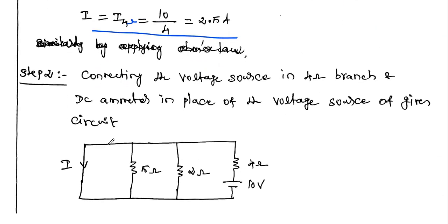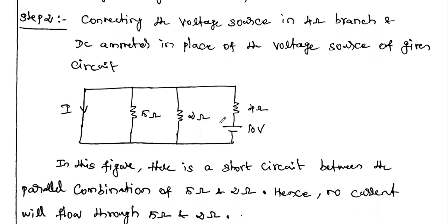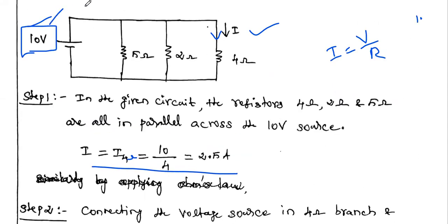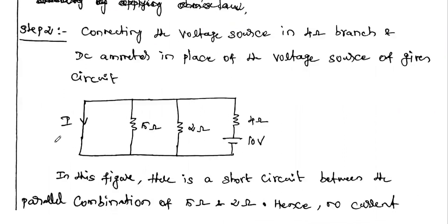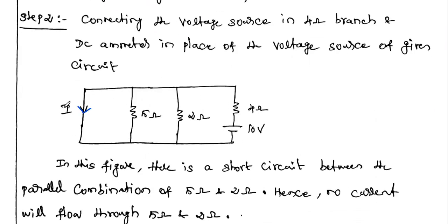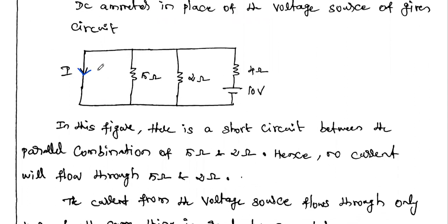So the first step is done. In the second step, we have to interchange the input voltage source — interchange the input and the output, draw the new diagram. Where we were measuring the current, in the place of the output response, we place the 10 volt voltage source. So we place the 10 volt voltage source in that particular branch and measure current in the place of the input source — in this branch we have to measure the current.